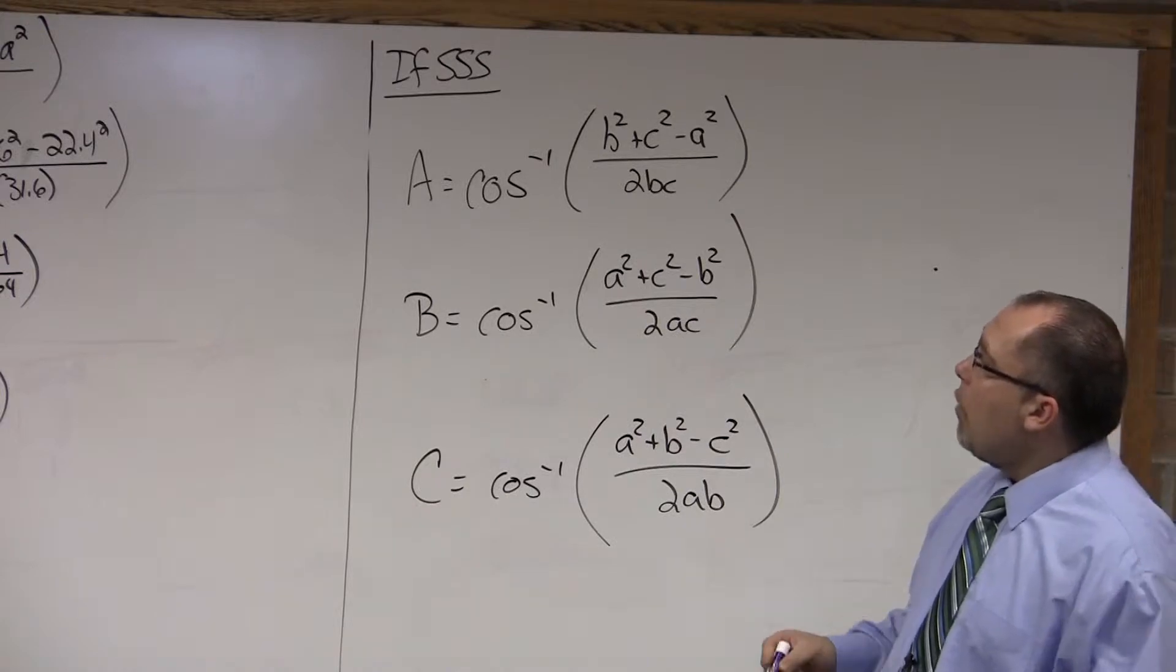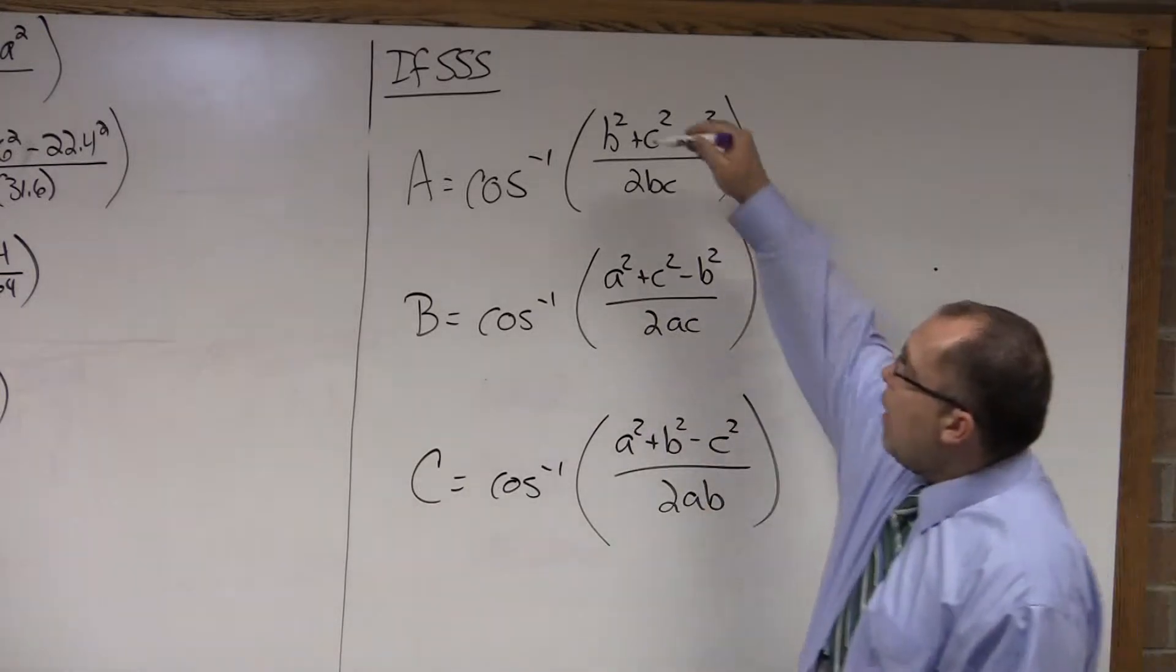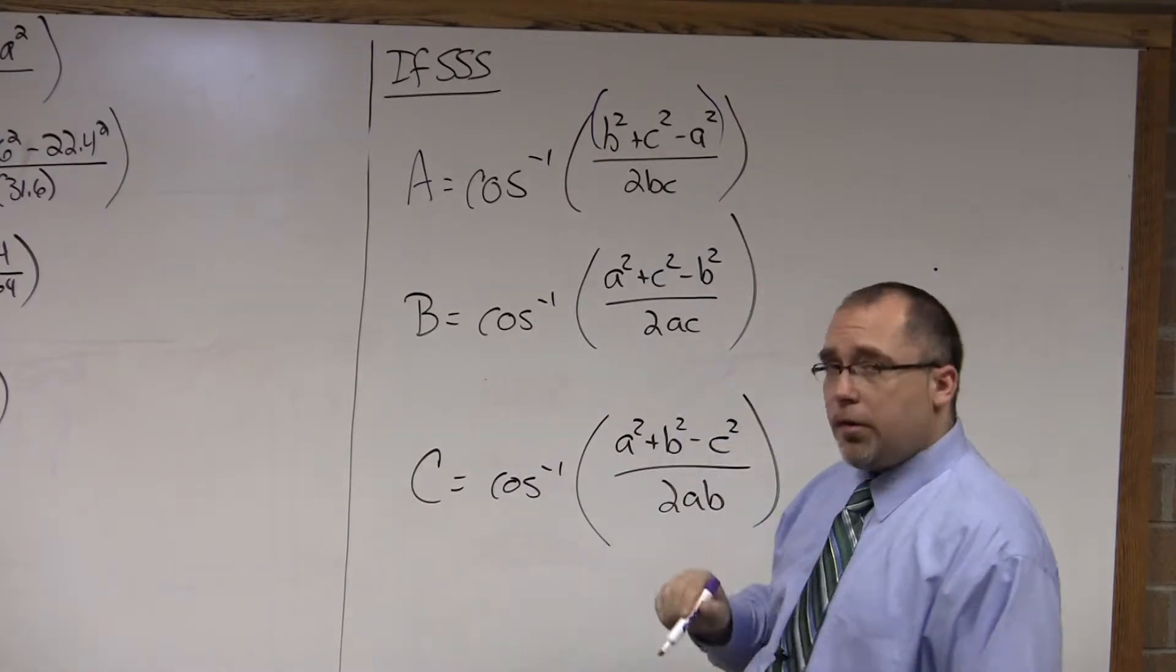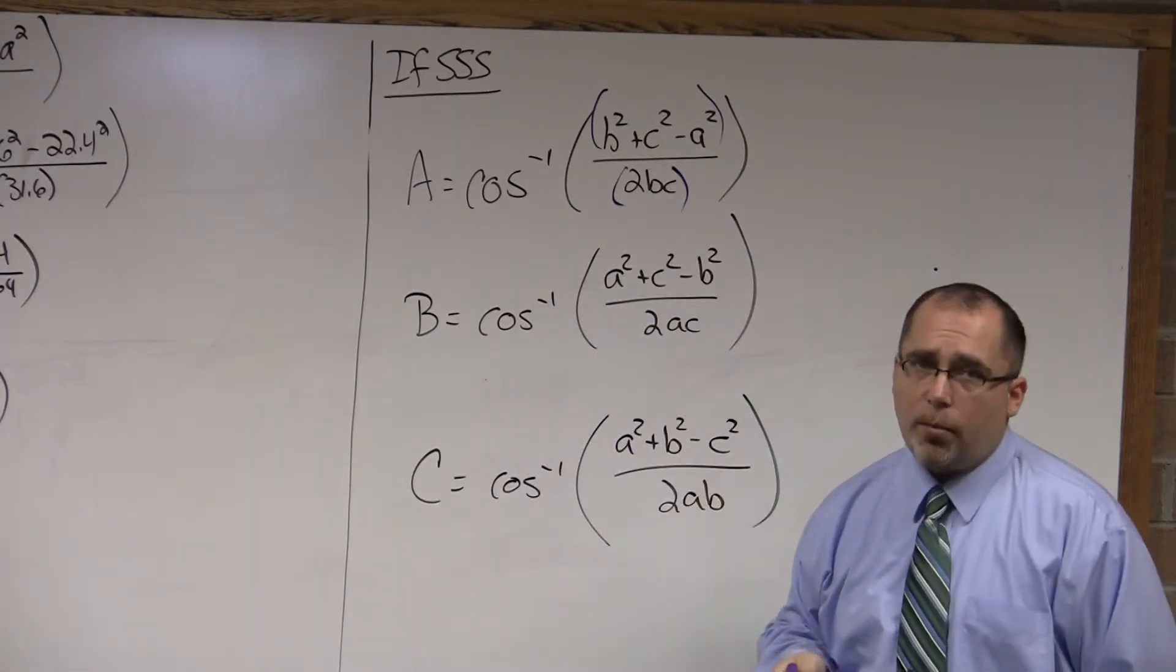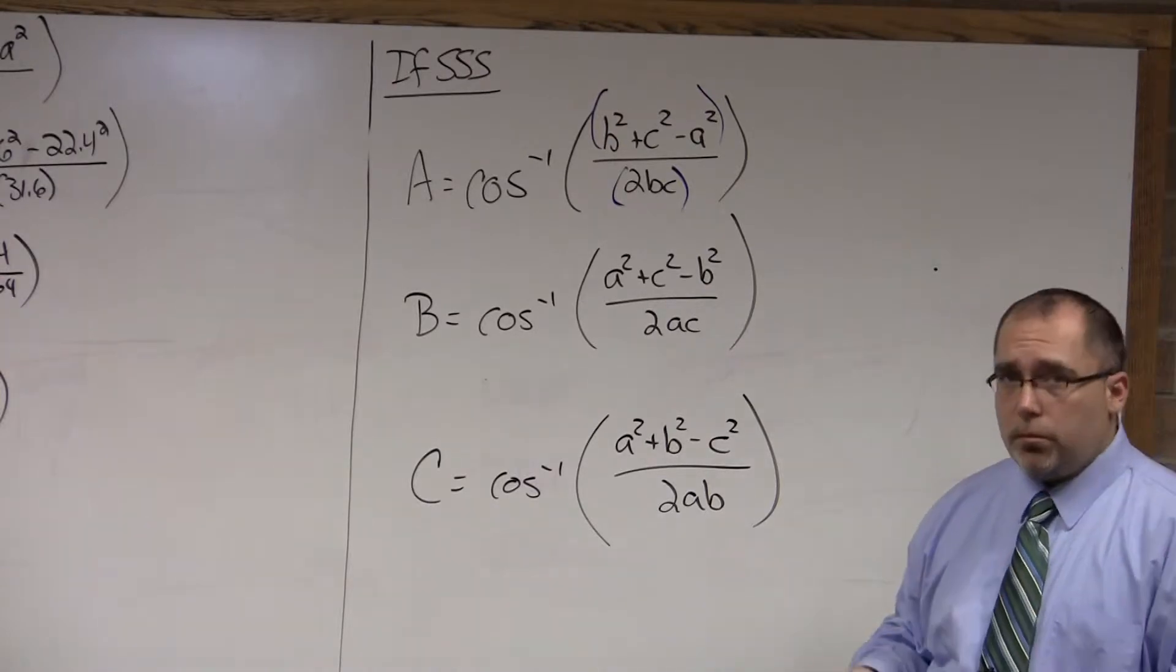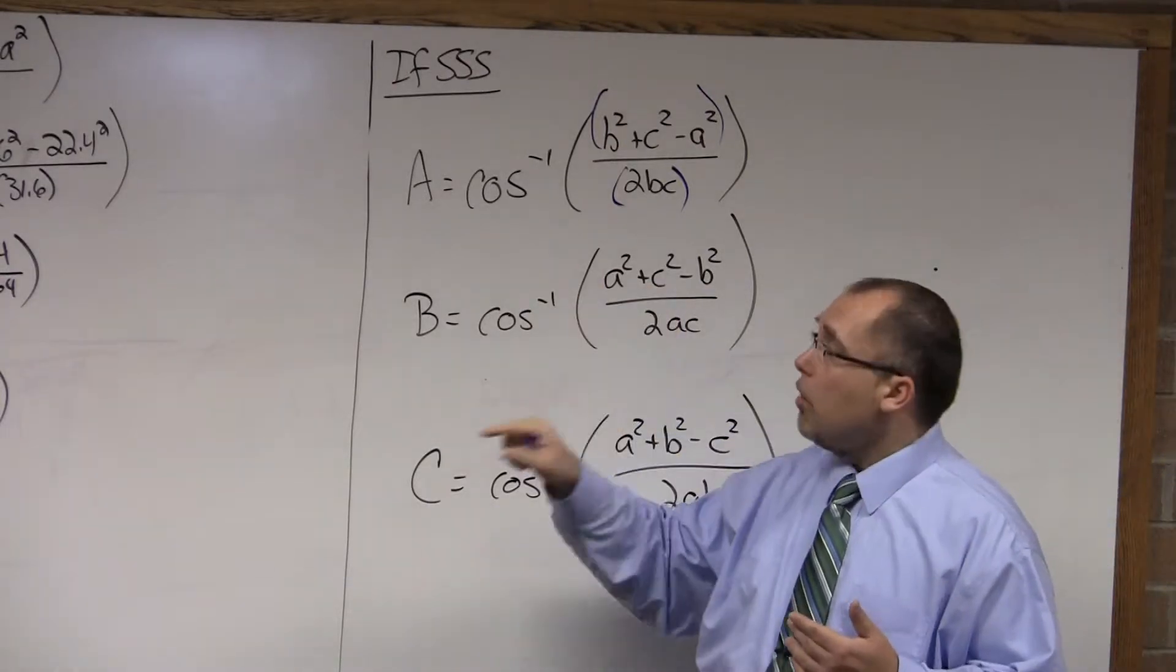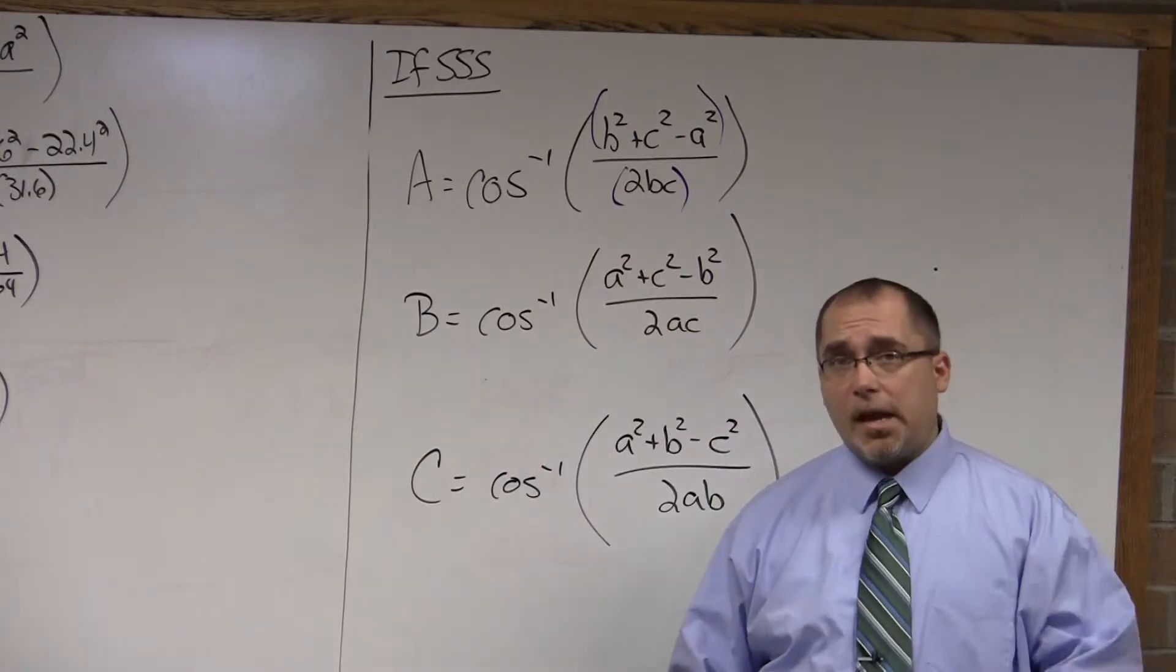So, when working with these, especially when typing them in a calculator, I want you to put your numerator in its own set of parentheses divided by the denominator in its own set of parentheses. You'll get a decimal, eventually. Once you get that decimal, then we'll hit second cosine of that decimal to get the angle.